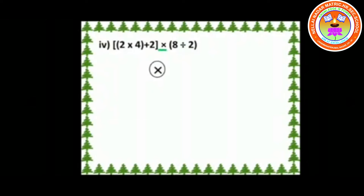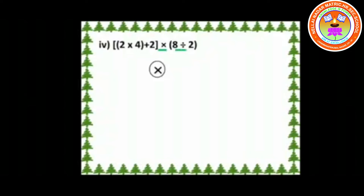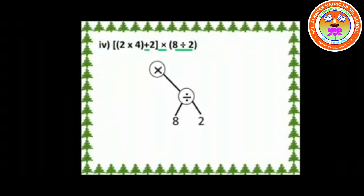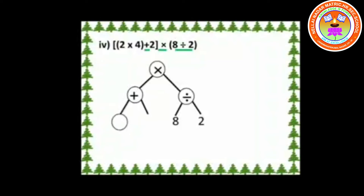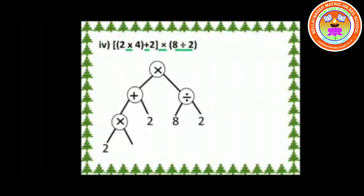Here we have two terms. On the right side, the branch is ÷ and its leaves are 8 and 2. On the left side, the symbol + is the node and its leaf is 2, then the symbol × is the branch and 2 and 4 are the leaves.